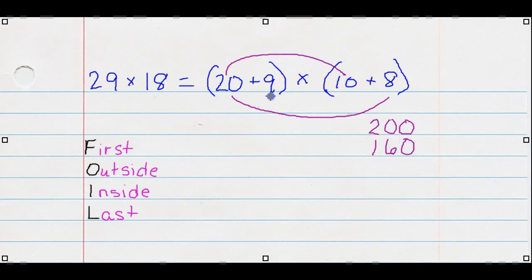Inside, our two inside numbers. 9 plus 10. That is 90. And then our two last numbers. 9 times 8. Make sure you're multiplying all these numbers because you're crossing the multiplication sign. So you're always multiplying these numbers back and forth. That would give us 72.